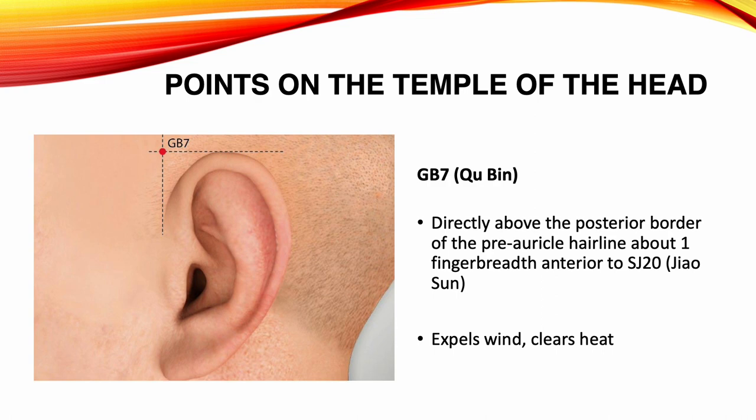Gallbladder 7, Chiu Pin. Location: directly above the posterior border of the pre-auricle hairline, about one finger breath anterior to Sanjiao 20. Functions: expels wind, clears heat. Indications: migraine, face pain, deviation of the mouth and eye, tightness of the teeth, tinnitus, pain in the temporal region, convulsions in infants.